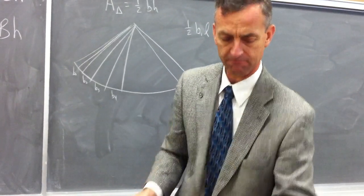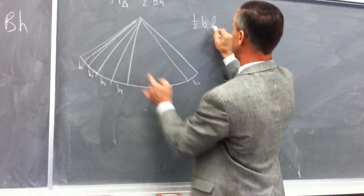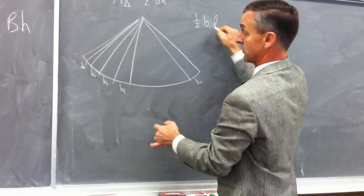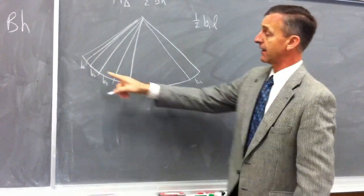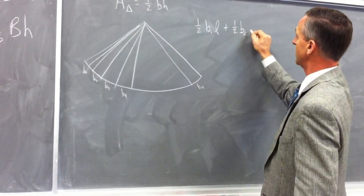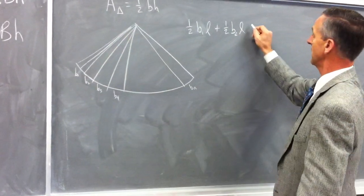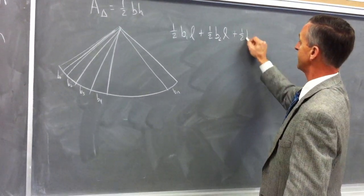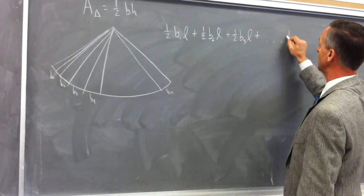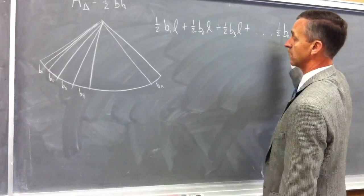This h is the slant height and typically they will use the letter l for that. That is this distance from the tip of the cone to an edge of the base of the cone. So the area of this first triangle would be one half base times height which is our slant height. The area of the next one would be one half b sub 2 times l, area of the next one one half b sub 3 times l, all the way over to one half b sub n times the slant height.